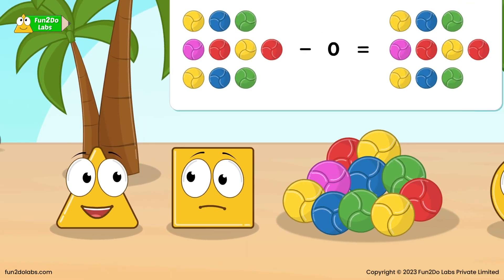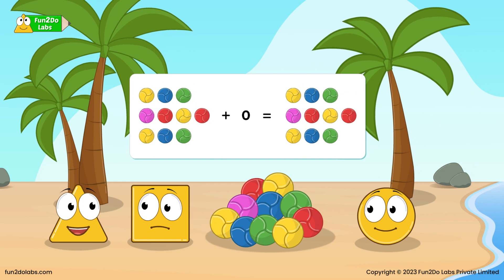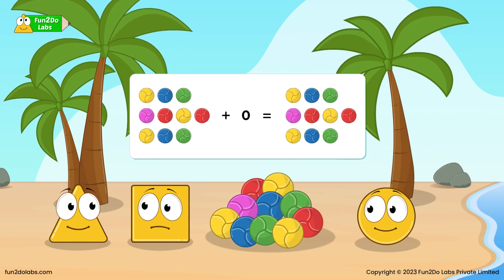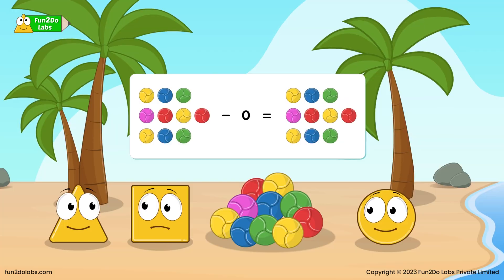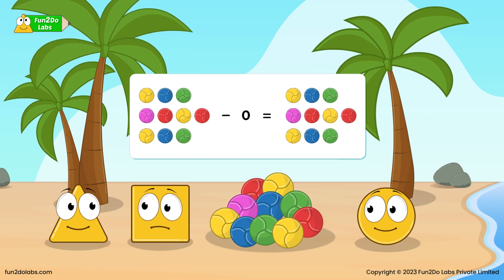Oh yes! Zero is right. When we add zero to any number, the result is the same number. Similarly, when we subtract zero from any number, the result is the same number, because that is equivalent to taking away nothing.